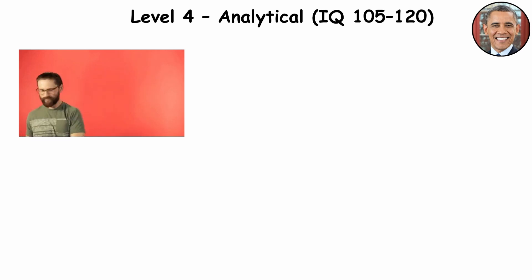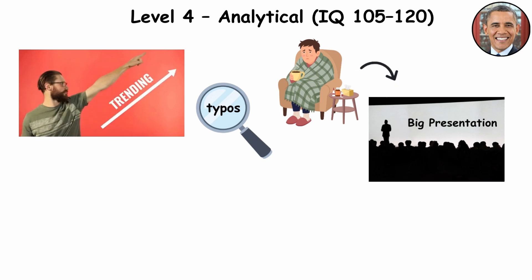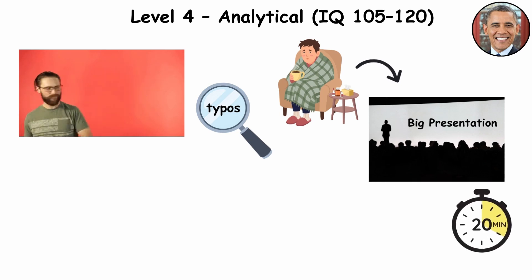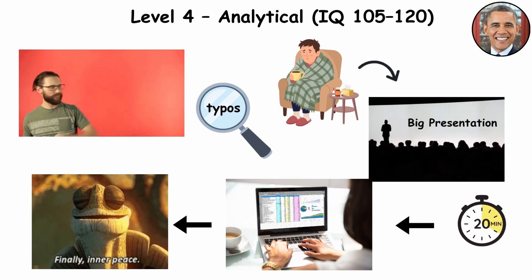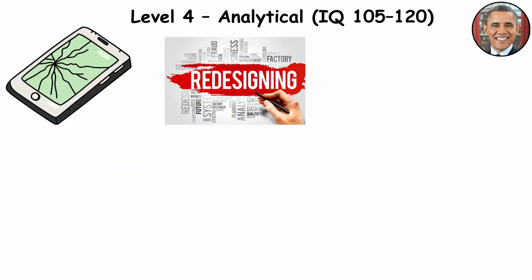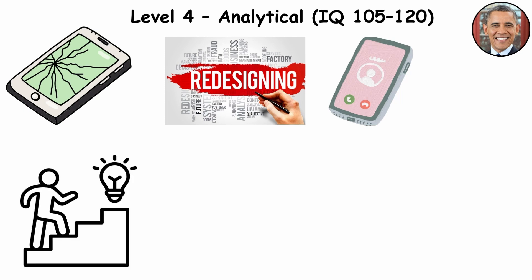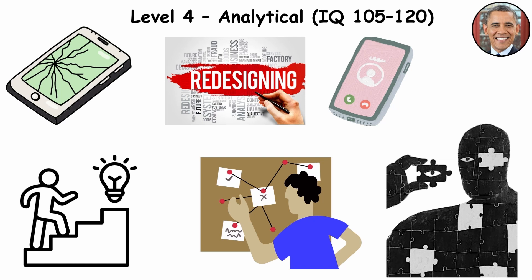That's why they're the first to notice trends, typos, and that one co-worker who calls out sick every time they're scheduled for a big presentation. They'll spend 20 minutes fixing the formatting on a spreadsheet no one else will ever open, for inner peace. These minds don't just fix what's broken, they redesign what should never break. And then there are minds that go a step further, not just analyzing the system, but seeing patterns inside the chaos itself.